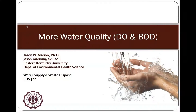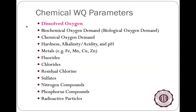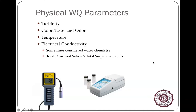Water quality with a focus on chemical parameters. We're going to start by talking about dissolved oxygen, because that's one many folks may not fully appreciate until they see a fish kill. We'll also cover major water quality parameters. Physical parameters include turbidity — measured with a turbidimeter — color, taste, odor, temperature, and electrical conductivity, measured in microsiemens, which indicates how effectively water carries a current.